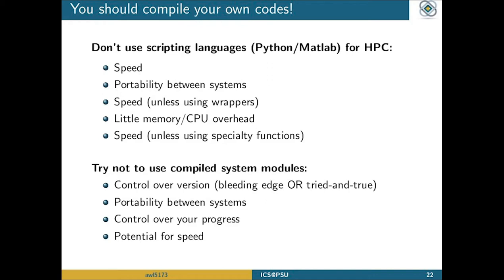It's going to be far more portable between systems. It will be a lot faster unless you're starting to use some wrappers. It is possible to call C code from Python or MATLAB, but you're almost better off just writing it completely in C or Fortran. With your own compiled code you also have a lot more control over the memory as well as the CPU. You won't have a GUI or any of the bulk that comes with a scripting language, so you can use far fewer resources for the same task.